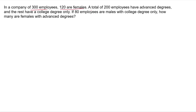In a company, there are three hundred employees. One hundred twenty are females, so one hundred eighty are male. Now, a total of two hundred employees have advanced degrees and the rest have college degrees. Eighty employees who are male have a college degree.